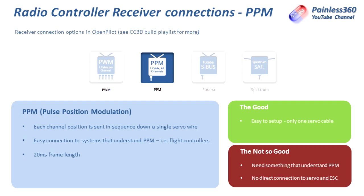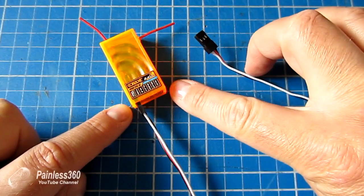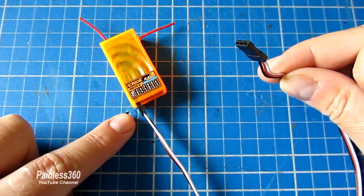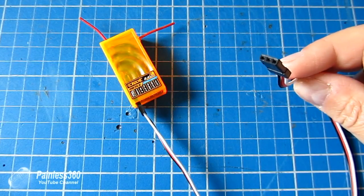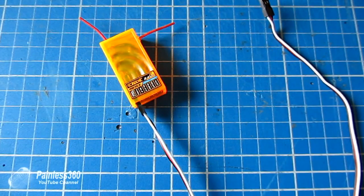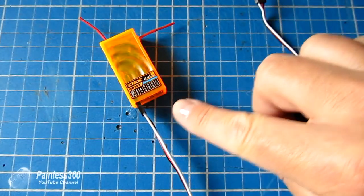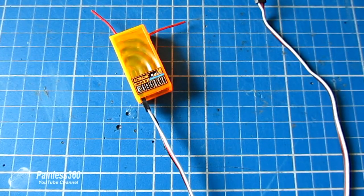On receivers like the R615X, the cool thing is that not only do you get the PPM signal out of the battery bind connection, but the other pins still output the individual PWM signals. So if you want to add things like landing gear, external lights, or a camera shutter, you can still plug another cable into one of those other connections too — it's a really versatile way to connect up your system.